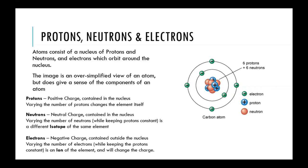Neutrons are also found in the nucleus of an atom and these have a neutral charge. When you change the number of neutrons, as long as the number of protons is constant — so it's the same element — the number of neutrons can vary. In the case of carbon, carbon has six protons and usually six neutrons as well, but it can also exist with seven neutrons or even eight neutrons, all still being carbon, but a little different.